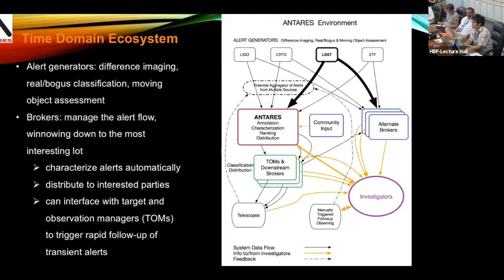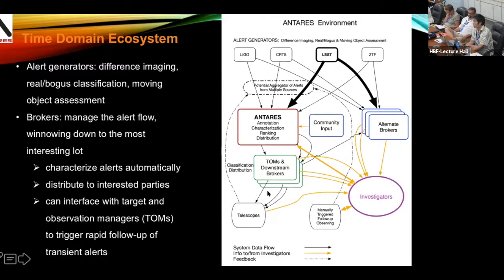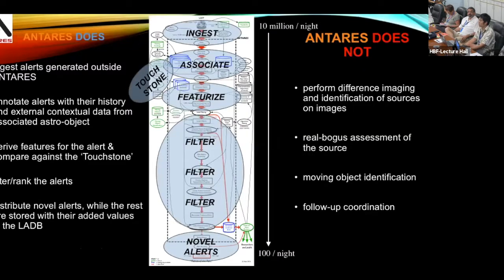Alert brokers will take alerts generated from all surveys — not only optical, but also LIGO or neutrino detection networks. We classify alerts using either the light curve or contextual information like cross-matching with different catalogs. We dispatch them to interested parties, and we can also interface with Target and Observation Managers, which we call TOMs. The TOMs allow you to trigger a telescope and follow up targets immediately. The end goal is an end-to-end network with as little human interaction as possible.